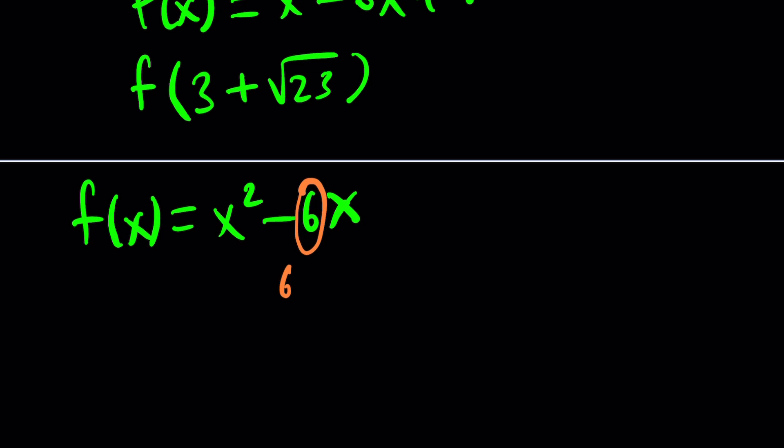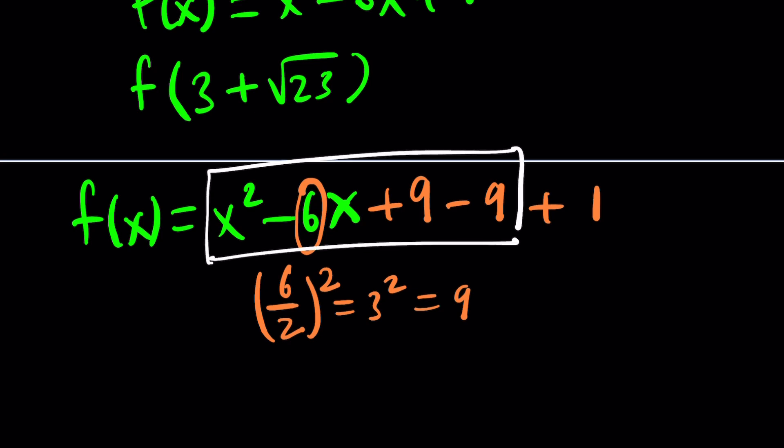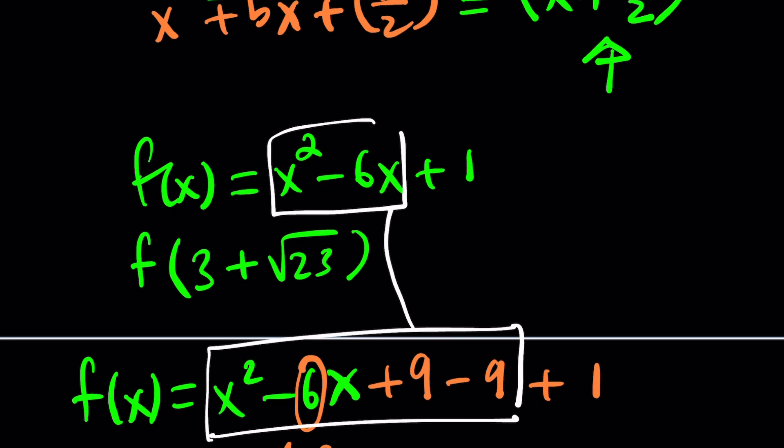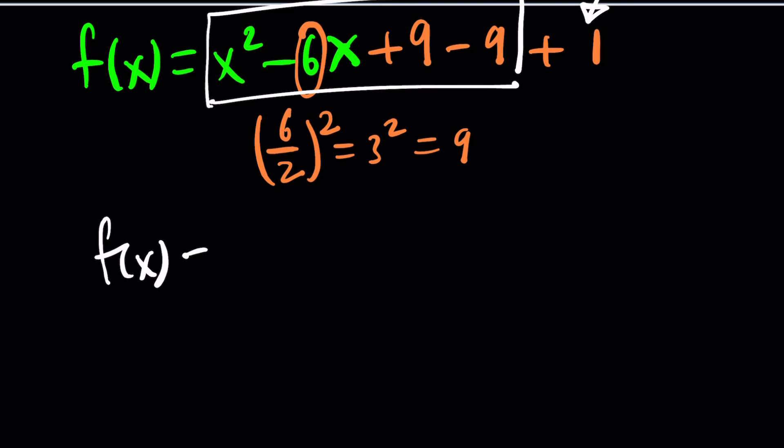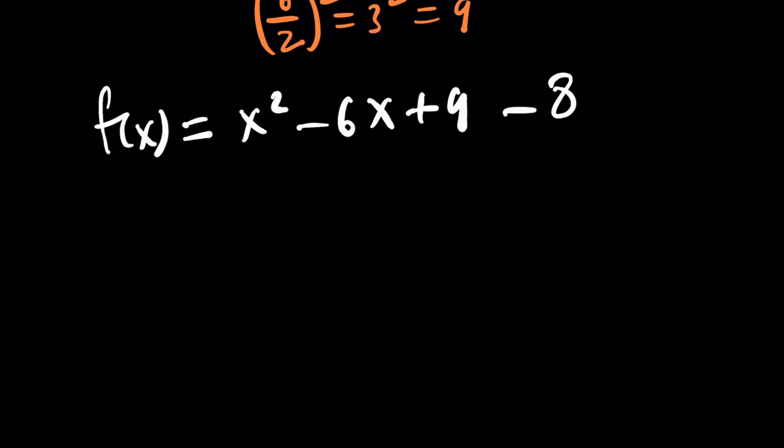Half of 6 squared. That's what you need to add. But that is 3 squared, which is 9. So you have to add 9 to this to make it a perfect square. But you can't just add 9. Of course, you have to subtract it. But then we also add a 1 here. So what we did was added 9 and subtracted 9 and kept the 1. Now f of x, these two will combine. We're going to get x squared minus 6x plus 9 minus 8. And now this part is a perfect square. So f of x will be x minus 3 quantity squared minus 8.